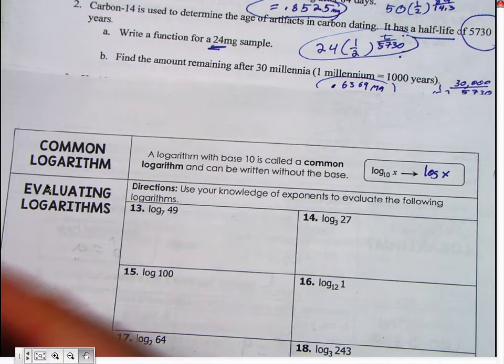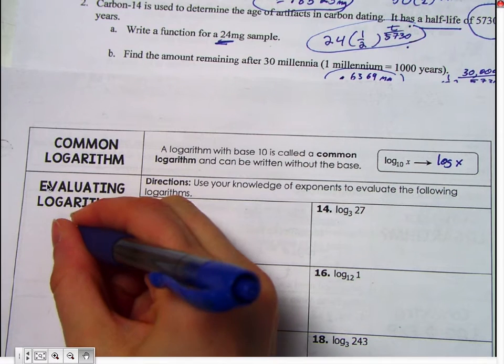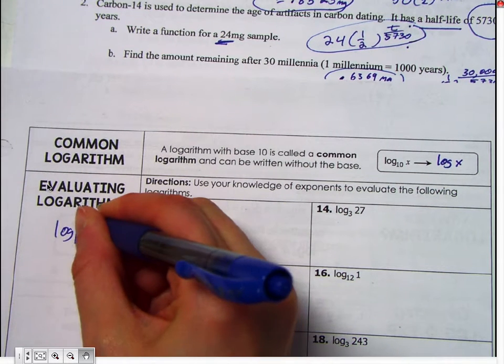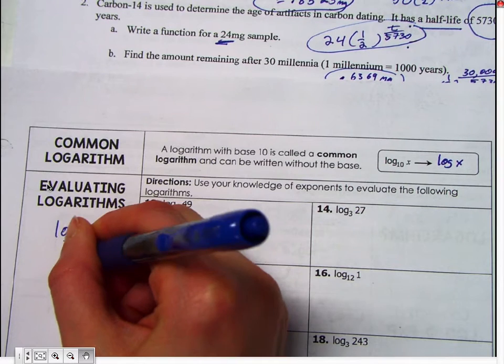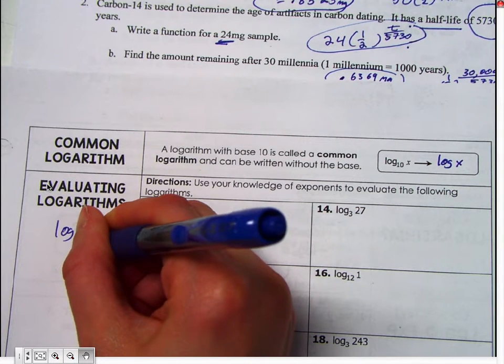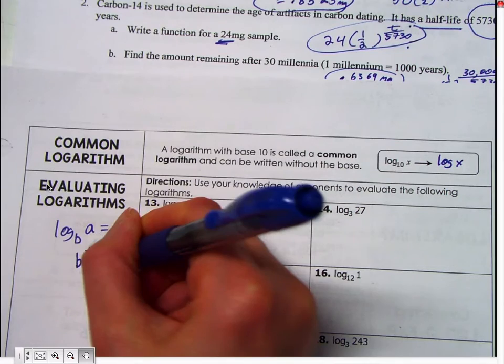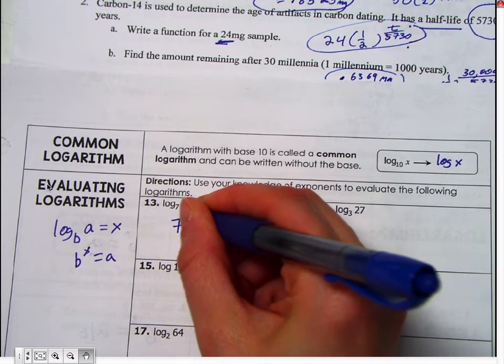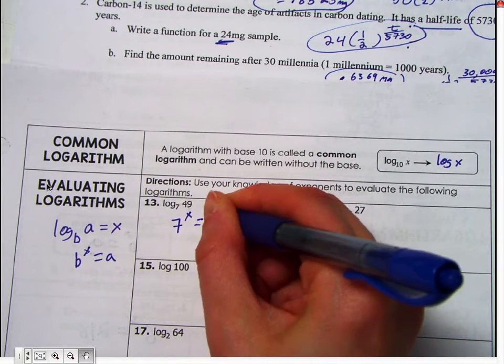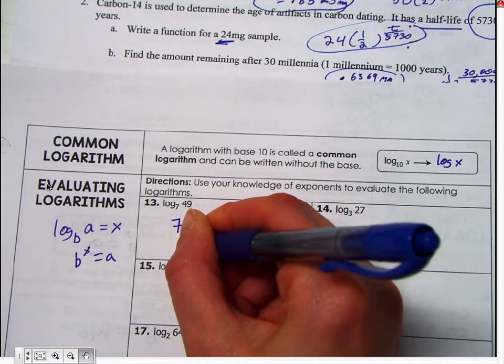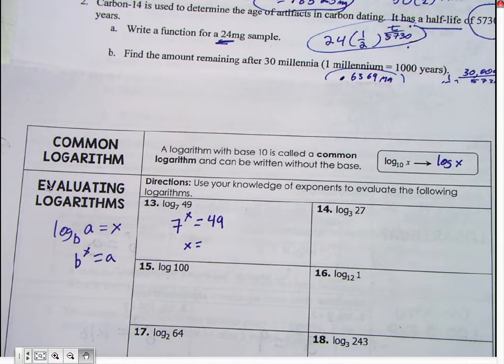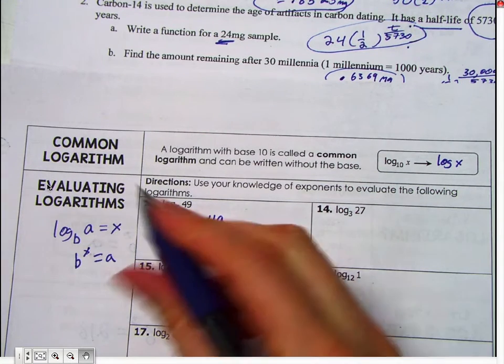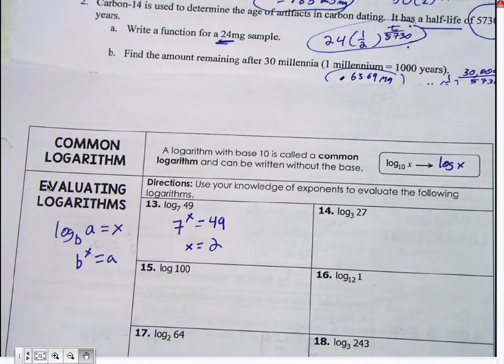Okay? All right. So again, I'm going to switch these from log base b of a equals x to b, base b, taken to the x power equals a. So log seven of forty-nine is seven to the x equals forty-nine. And then what does x equal? What does x equal? Two. Seven times seven is? Forty-nine.